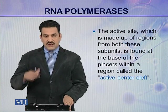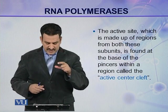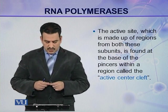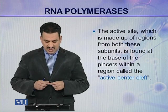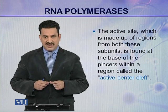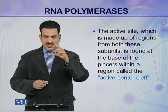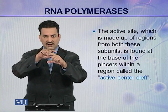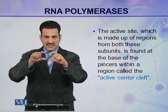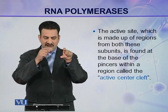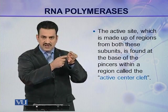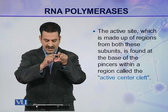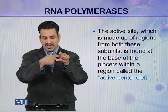The active site, which is made up of regions from both beta and beta prime subunits, is found at the base of the pincers within a region called the active center cleft. So the two pincers are beta and beta prime, and the active center lies at the base of these claws, which is called the active center cleft.